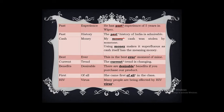'Best ever' — best means the most excellent thing that has ever happened, so using 'ever' again is superfluous. 'Current trend' — trend itself means a current happening or current change, so using 'current' again is superfluous. The correct form is: 'The trend is changing.' 'Desirable benefits' — benefits are always desirable, so using 'desirable' again is superfluous. The correct form is: 'These are the benefits if you purchase our product.'